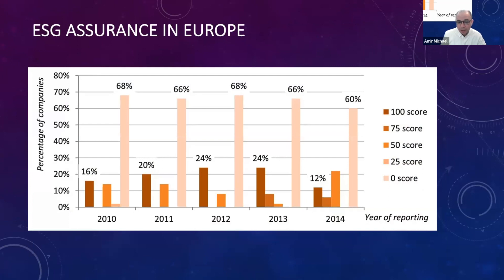In Europe, we can see that around 68% of organizations had a zero ESG score — meaning they disclosed very little or nothing about ESG. This figure was around 68%, 66%, and 60% through to 2014, and it has been declining. So the number of companies with zero ESG disclosure is declining, while there's a slight increase in those with a 100% disclosure score. Around 2000 to 2014, organizations started recognizing the costs involved.